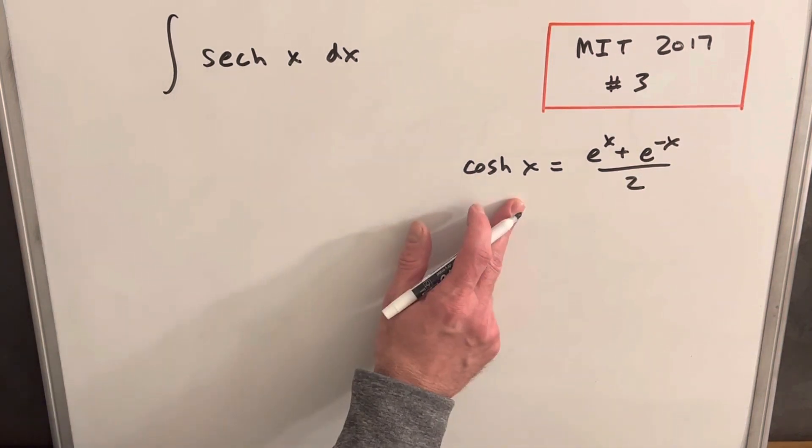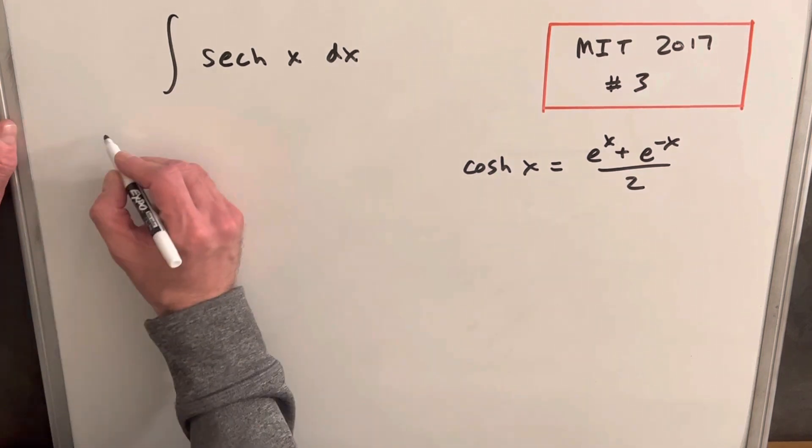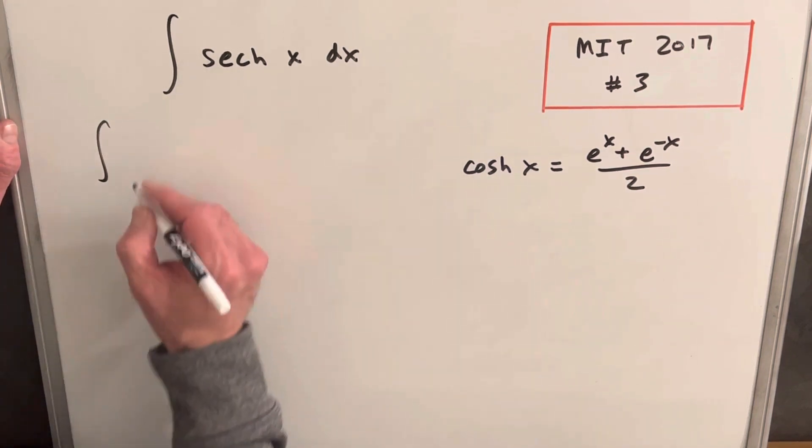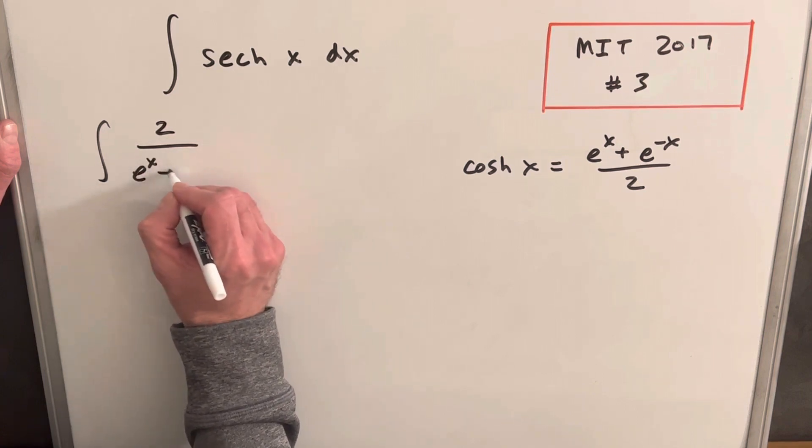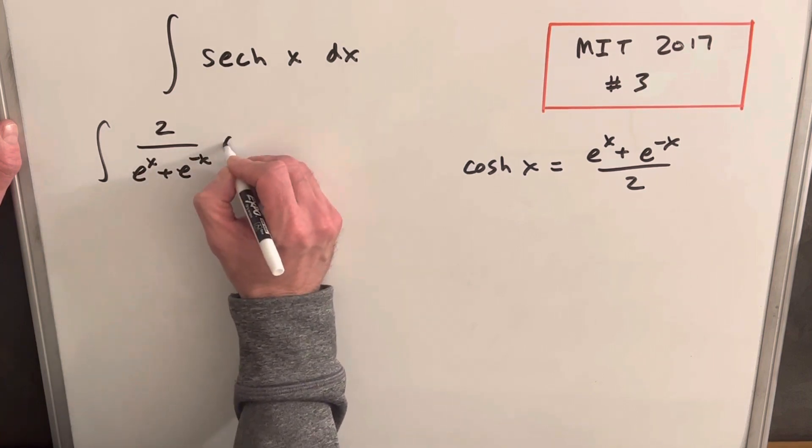Hyperbolic secant is just the reciprocal of this. So let's rewrite this in terms of the exponentials. We're going to have 2 over e to the x plus e to the minus x dx.